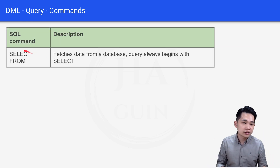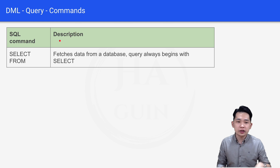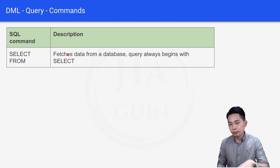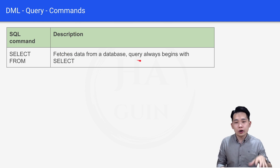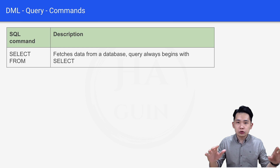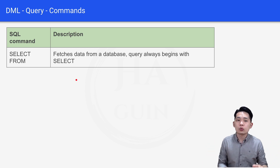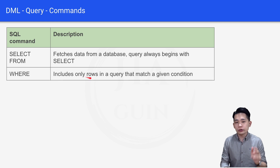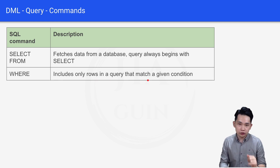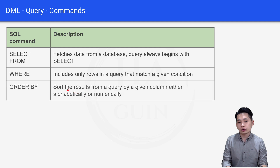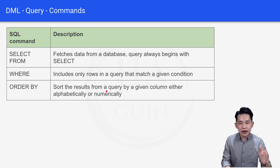The first one will be SELECT FROM, and the description is it fetches data from a database. A query always begins with SELECT. So for all the DML query commands, they always start with SELECT FROM. Next is the WHERE command, which includes only rows in a query that match a given condition. And then we have ORDER BY, which sorts the results from a query by a given column either alphabetically or numerically.